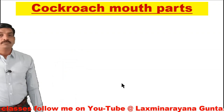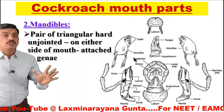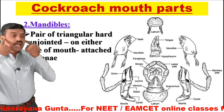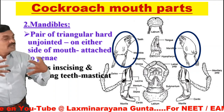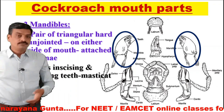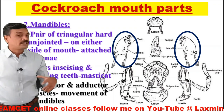The mandibles are a pair of triangular, hard, unjointed structures present on either side of the mouth and attached with the genae — the cheek sclerites. These mandibles bear incising and grinding teeth, which are useful in masticating the food. They are attached with a pair of abductor and adductor muscles, which are useful for the movement of the mandibles.